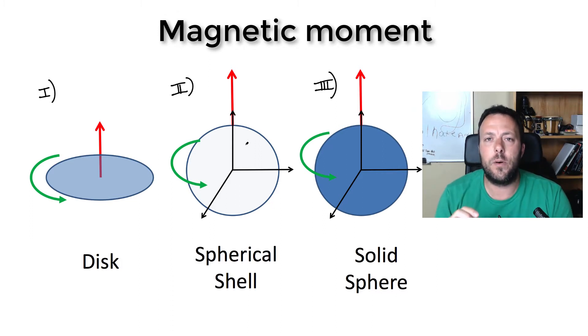So the spherical shell is going to have a charge Q that's going to be uniformly distributed on the surface of the shell. We're going to spin this shell at an angular frequency omega and let's see how we now calculate the magnetic moment of this object.